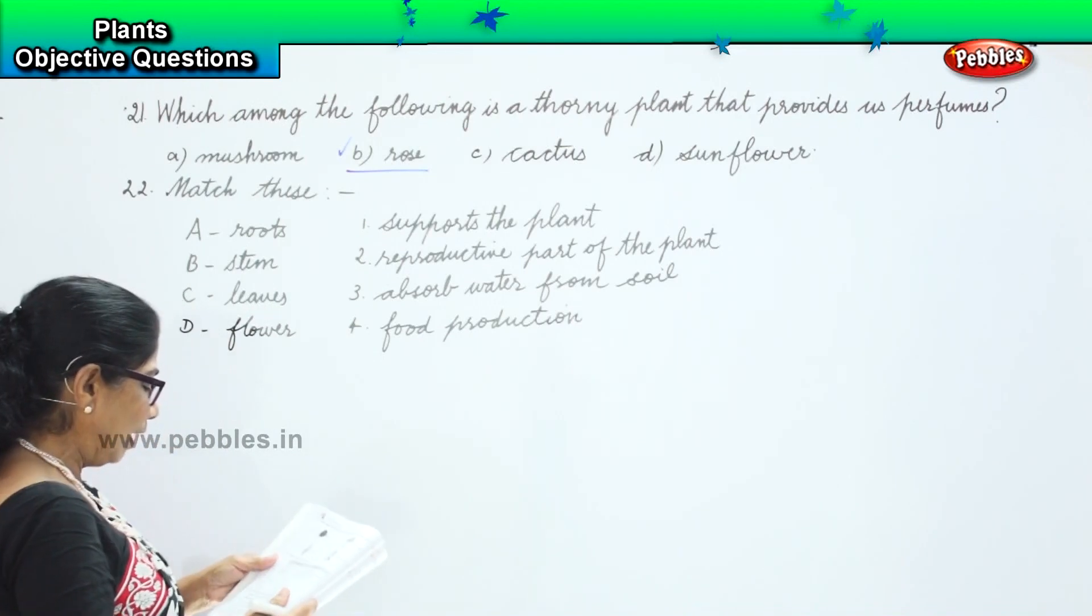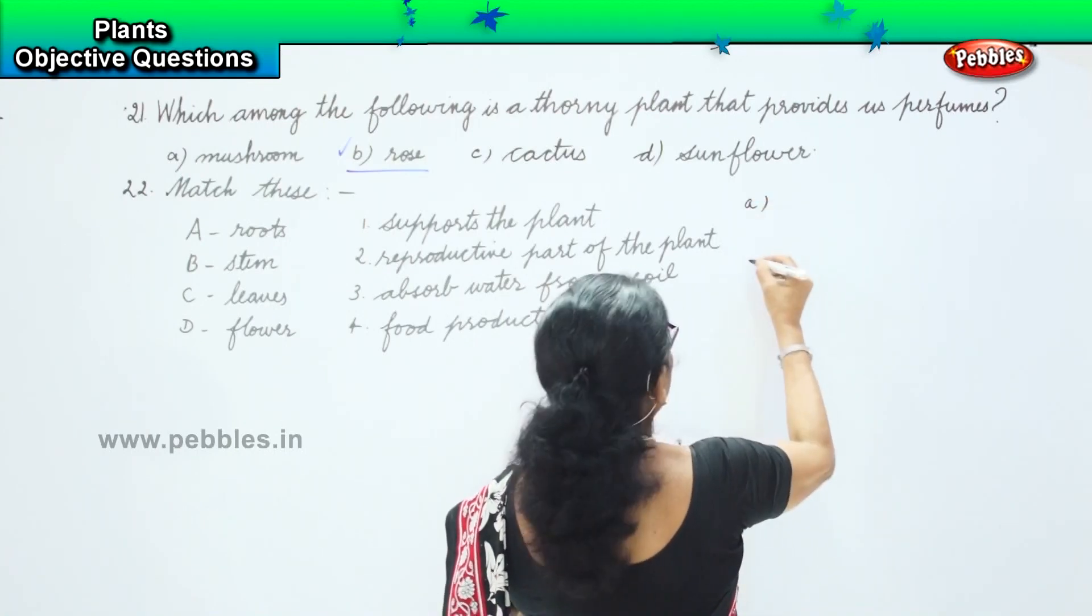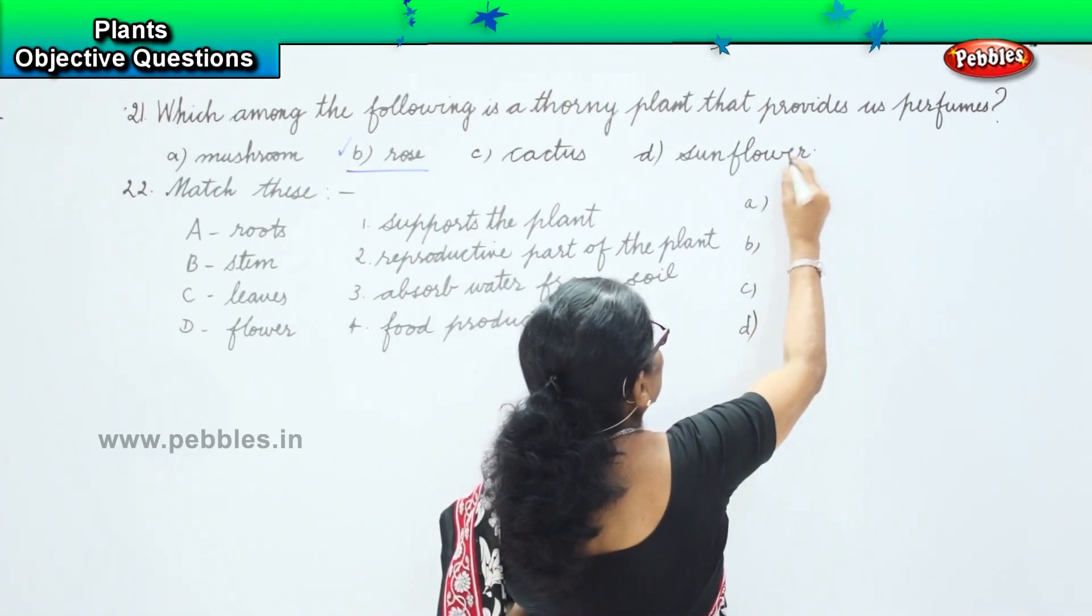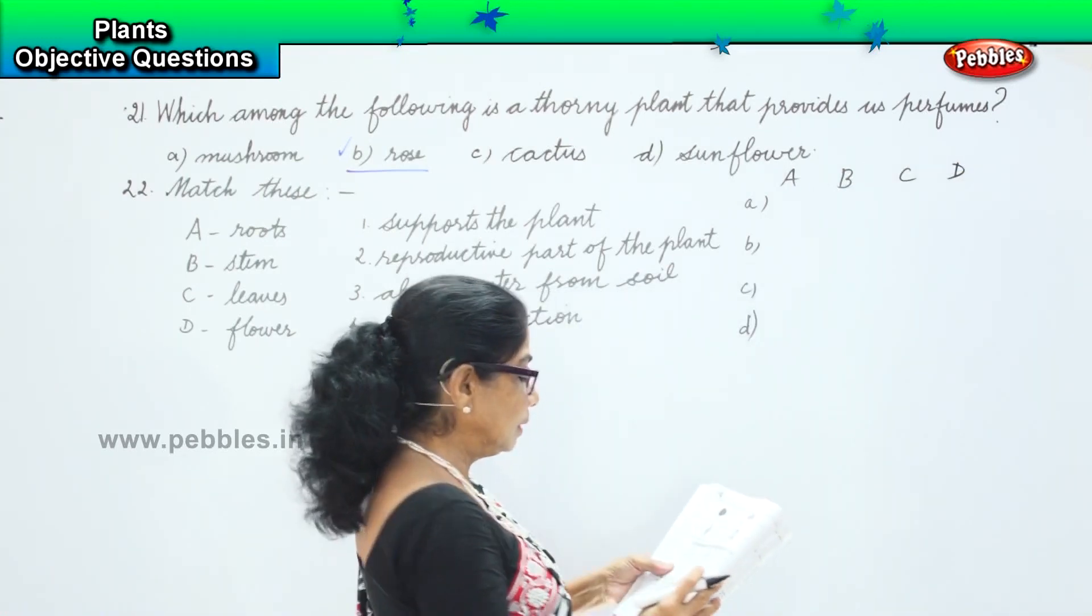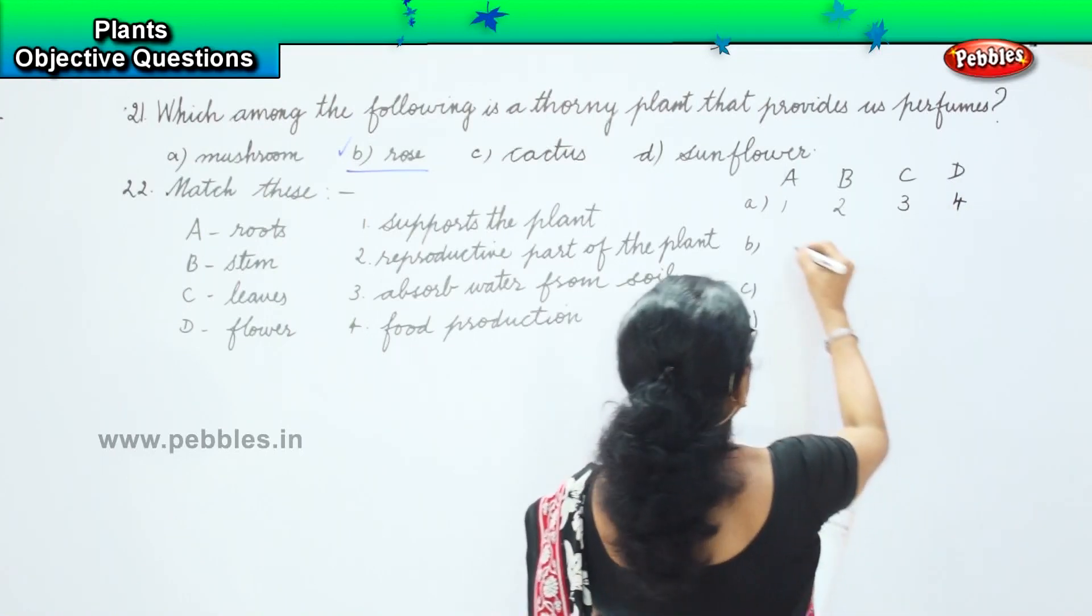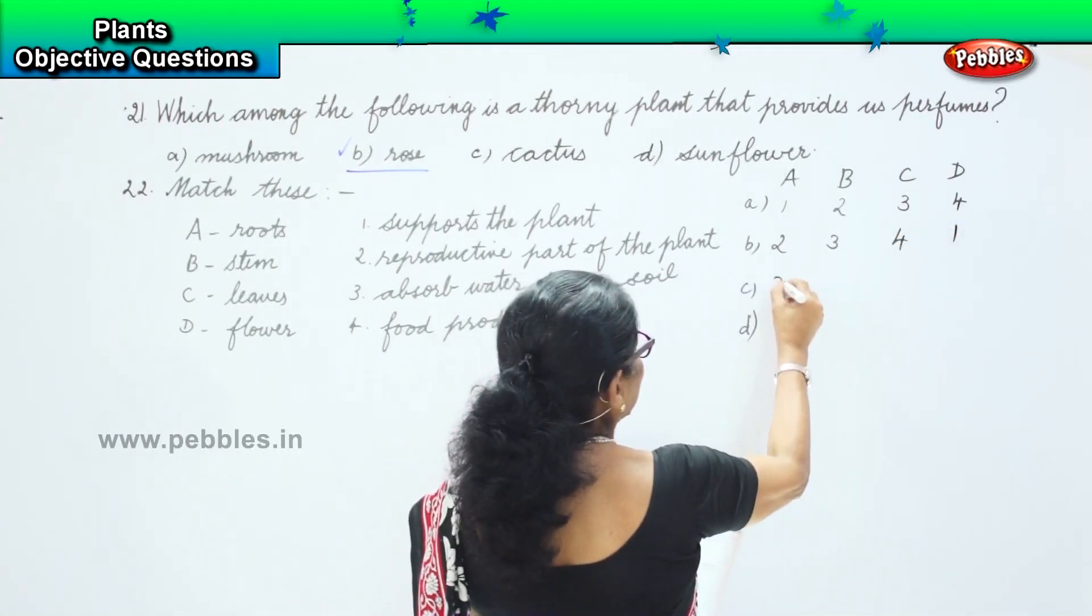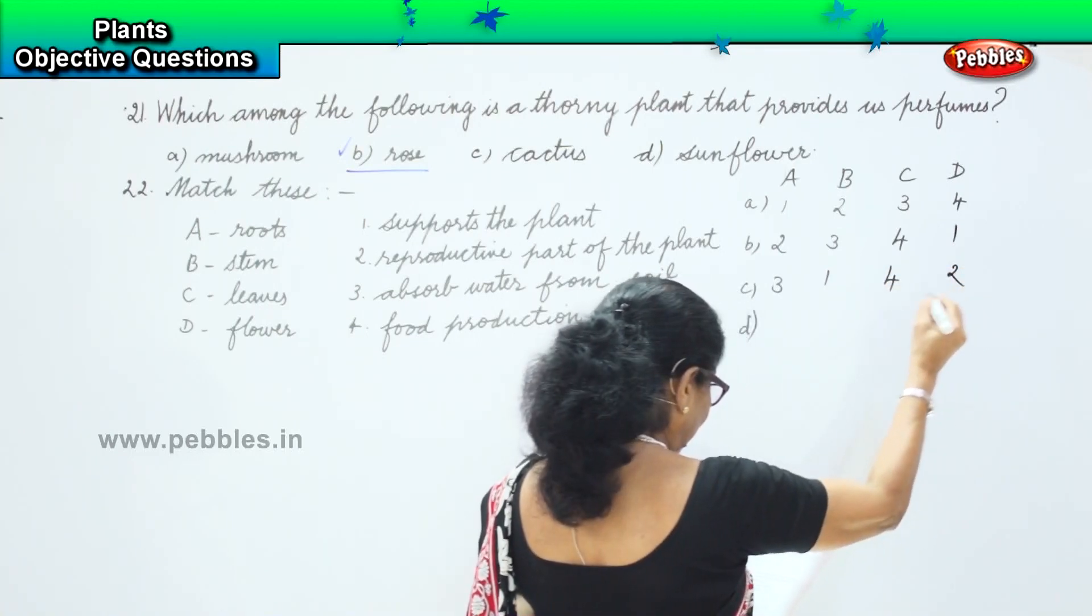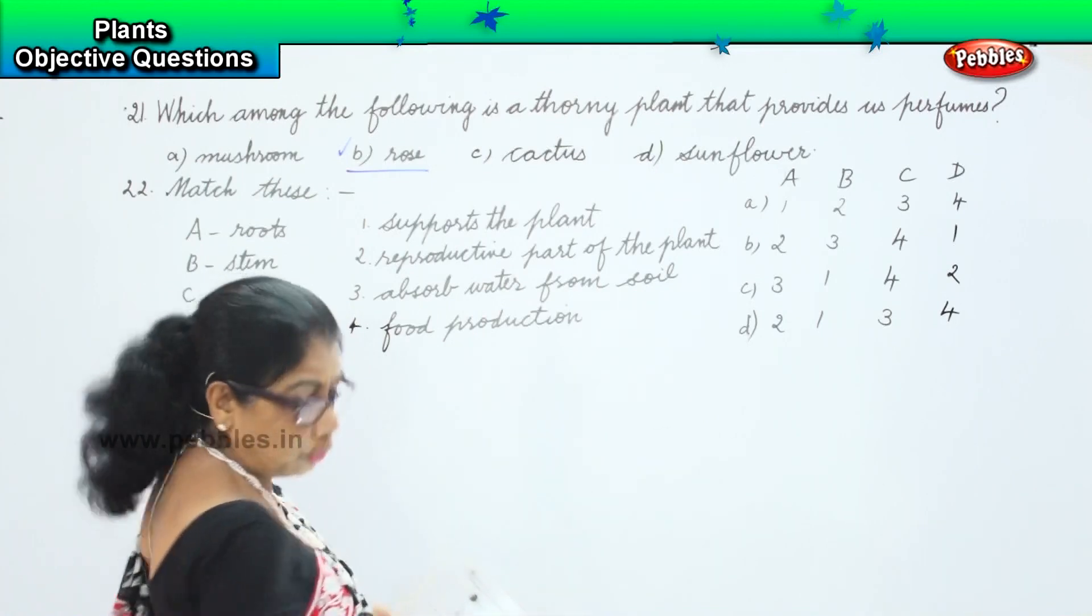We have to do the matching and then you have options A, B, C and D. The options are: A is 1, 2, 3, 4. Second one is 2, 3, 4, 1. Next is 3, 1, 4, 2. And the last one is 2, 1, 3, 4. Now let's do the matching before we go to the answers.